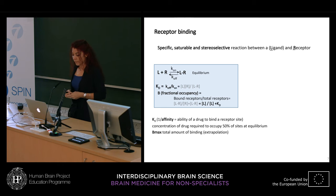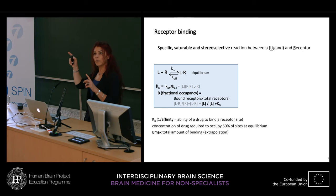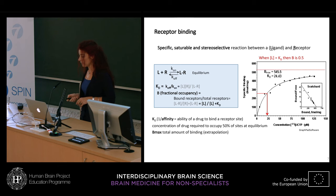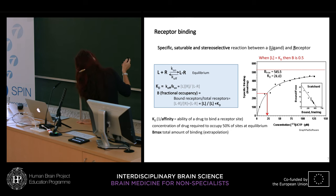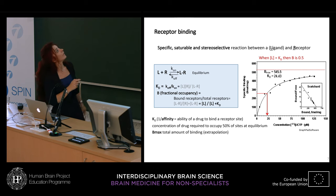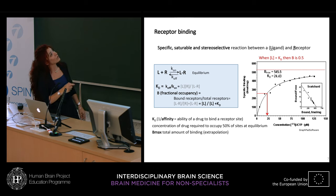The Bmax is the total amount of binding, usually found by extrapolation of the curves obtained in the receptor binding reaction. As an example, the kind of graphic one typically sees is a hyperbolic curve — as the concentration of radioactive ligand increases, specific binding rises. The point where receptor occupancy is half the maximum value is the KD, and Bmax is obtained by extrapolation, for example via a Scatchard linearization plot.